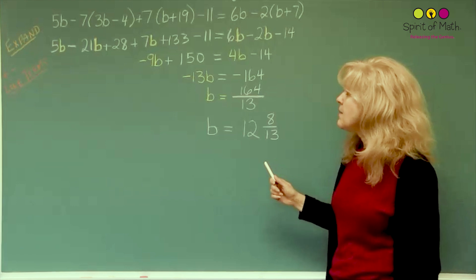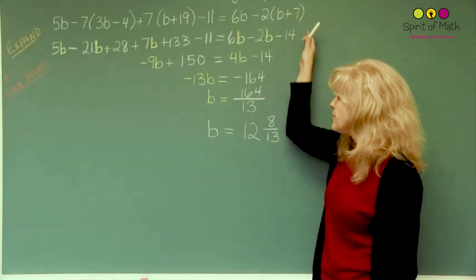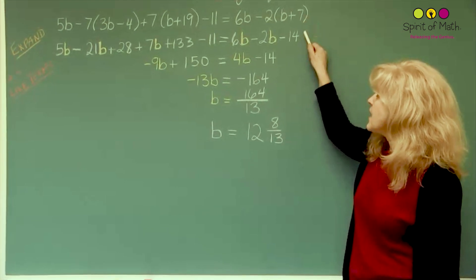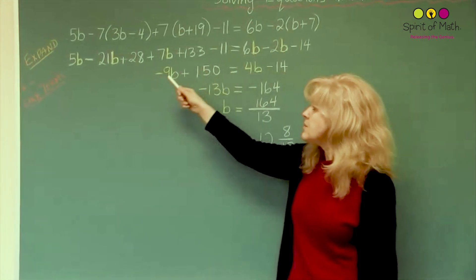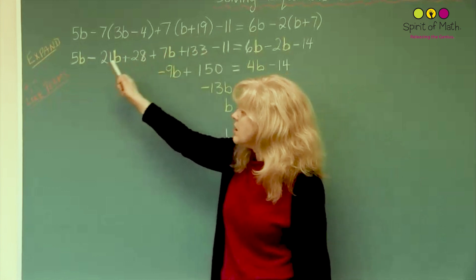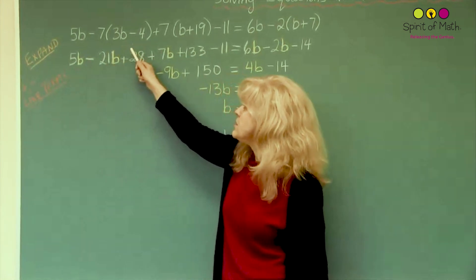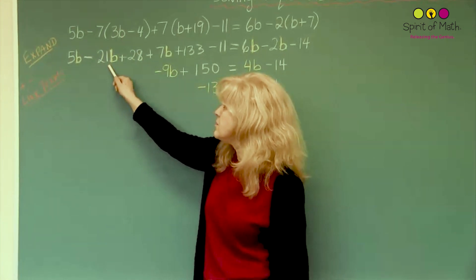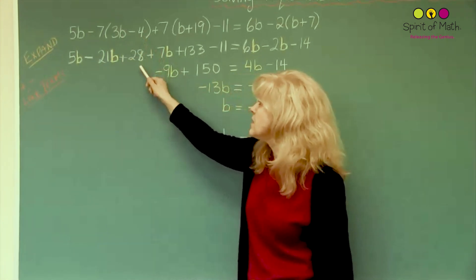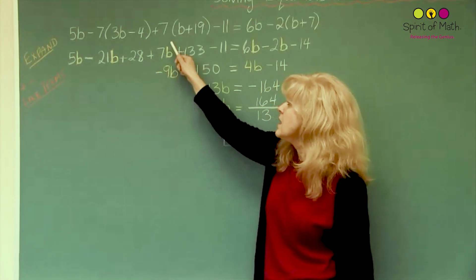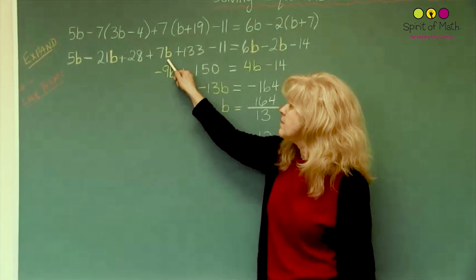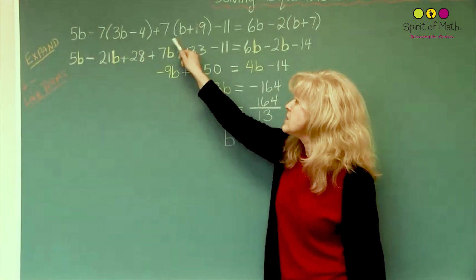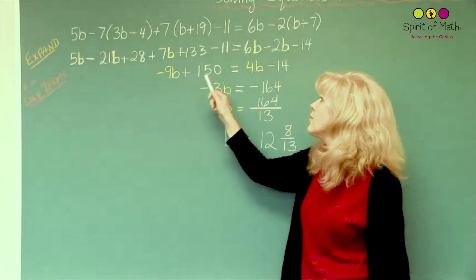I've got the full solution here and I'm just going to go through what I did. Going from this step to this step, all I did was multiply out — it's called expanding. I used the distributive law, and I multiplied negative 7 times 3b to get negative 21b. Negative 7 times negative 4 is positive 28. 7 times b is 7b. 7 times 19 is 133 and is positive. The signs are also very important.